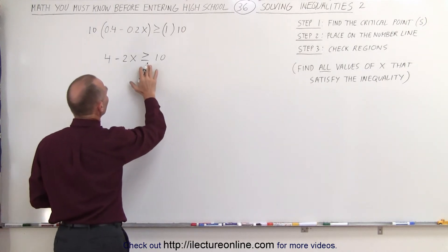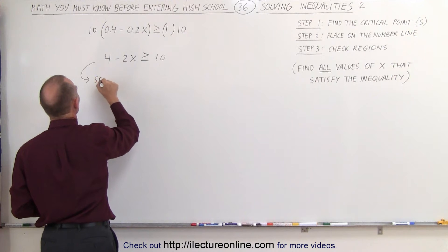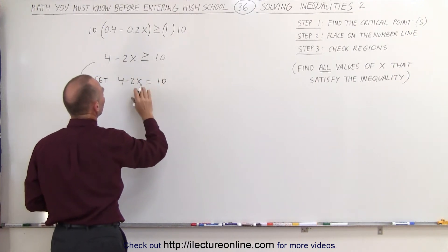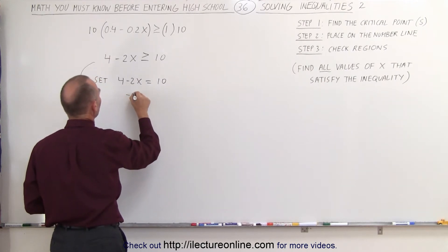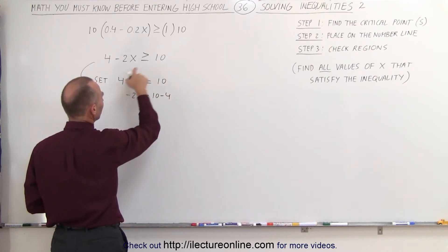So what we do is we take this and we turn that into an equal sign, so we're going to set 4 minus 2x equal to 10 and solve for x. The next step we're going to do is move the 4 to the other side. We have minus 2x is equal to 10 minus 4, because when you cross the equal sign, the sign changes.